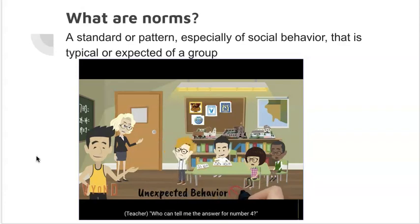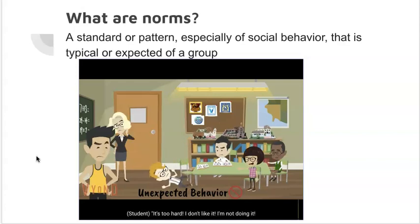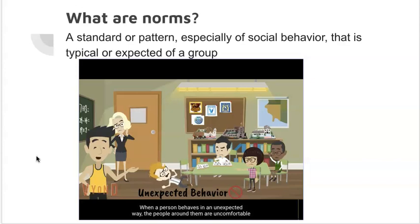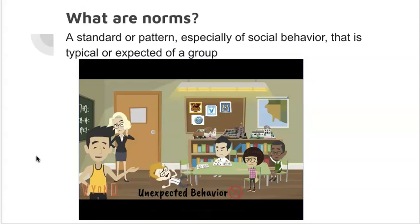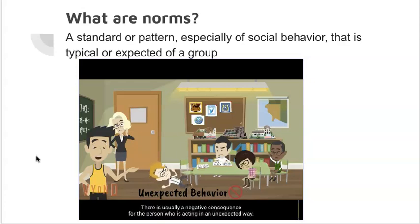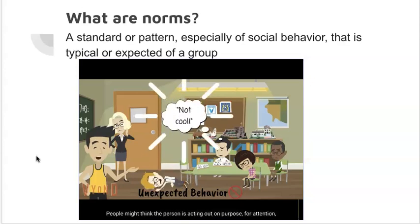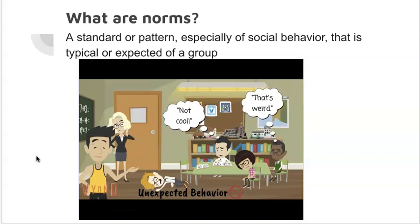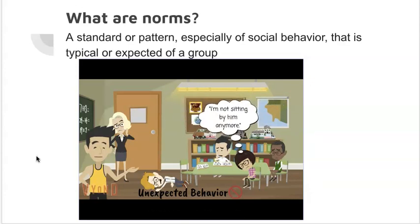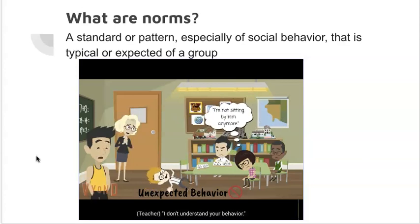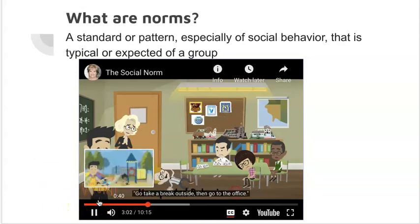When a person behaves in an unexpected way, the people around them are uncomfortable because something is unpredictable and not normal, which signals that there may be a problem. When a person acts unexpectedly, people worry. There is usually a negative consequence — people might have negative thoughts about them, think the person is acting out on purpose for attention or to cause problems, or doesn't know how to behave normally. People might avoid them in the future.